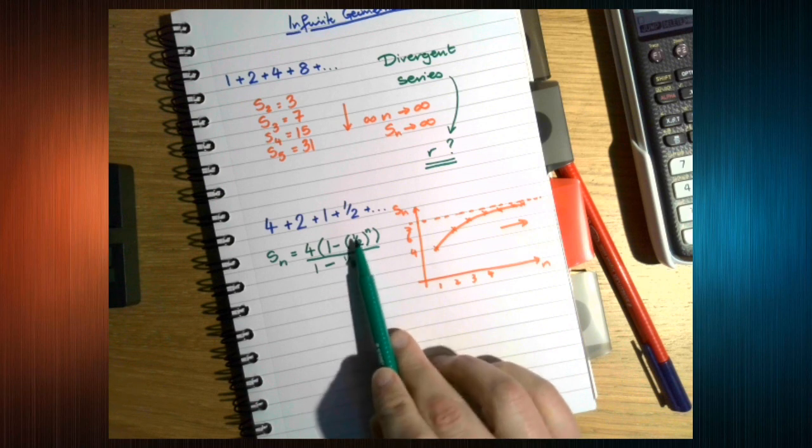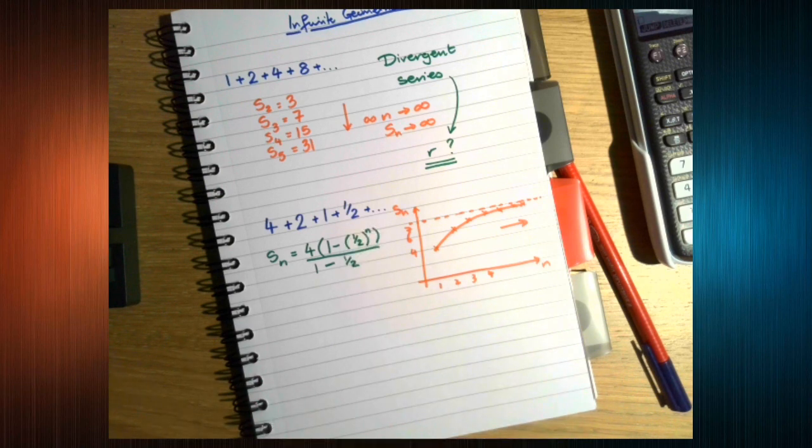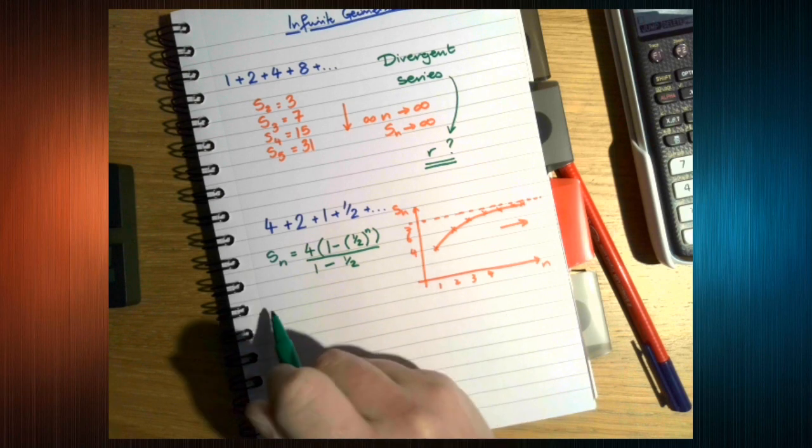Here, we have a fraction to a power. What happens to that as N gets bigger?